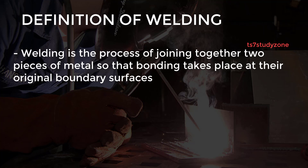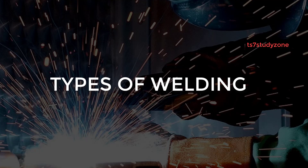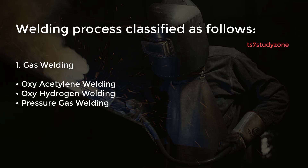When two parts to be joined are melted together, heat or pressure or both is applied, with or without added metal, for formation of a metallic bond. Let's see the types of welding. The welding process is classified as follows.